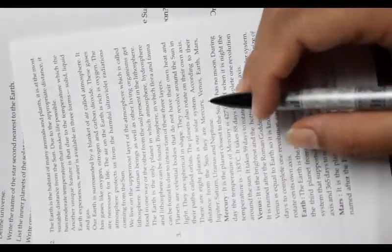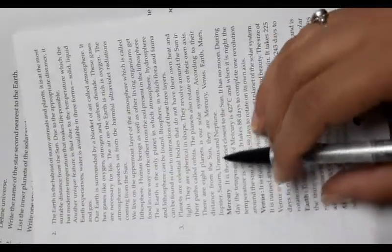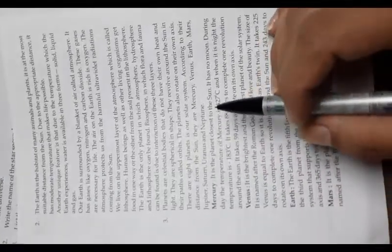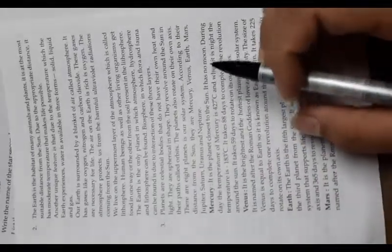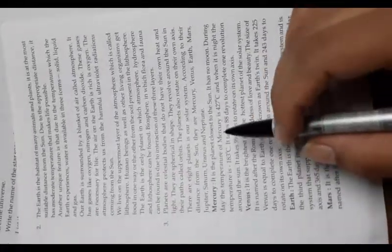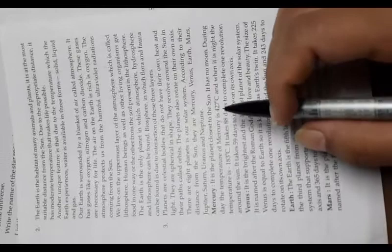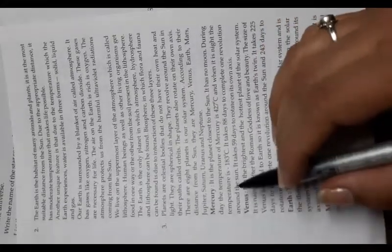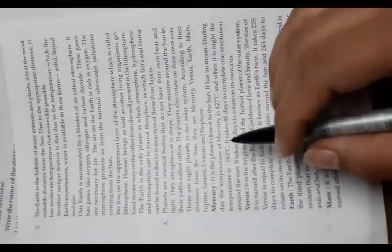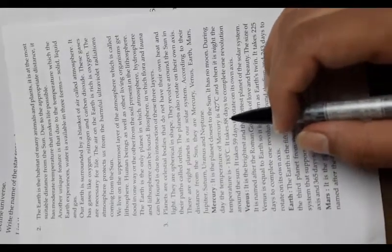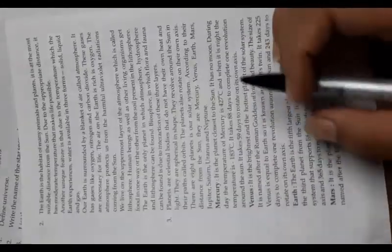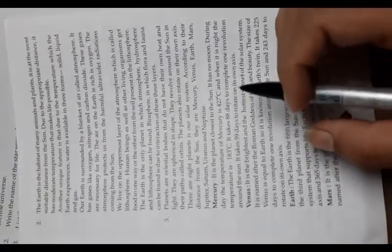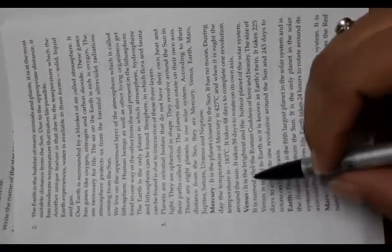According to their distance from the Sun, the planets are: Mercury, Venus, Earth, Mars, Jupiter, Saturn, Uranus, and Neptune. Mercury is the planet closest to the Sun. It has no moon. During the day the temperature is 427 degrees Celsius and at night it is minus 183 degrees Celsius. It takes 88 days to complete one revolution and 59 days to rotate on its own axis.